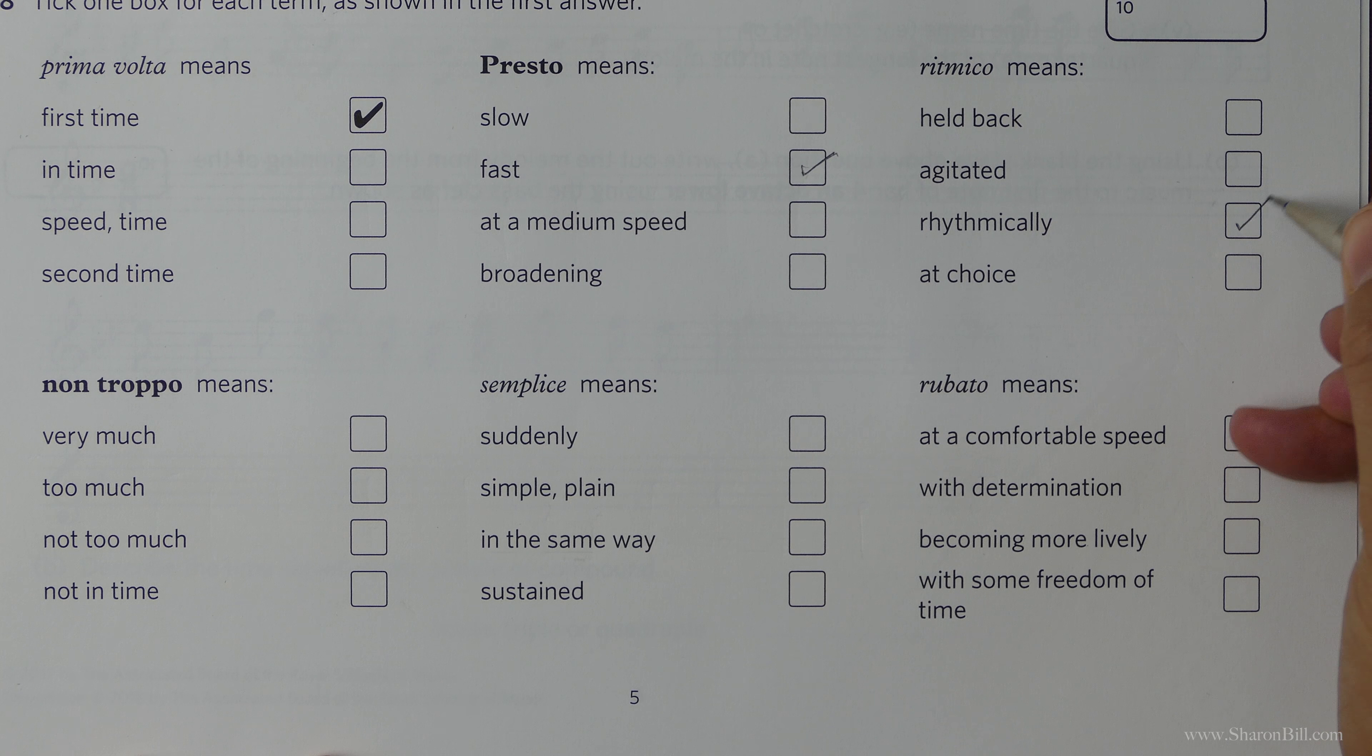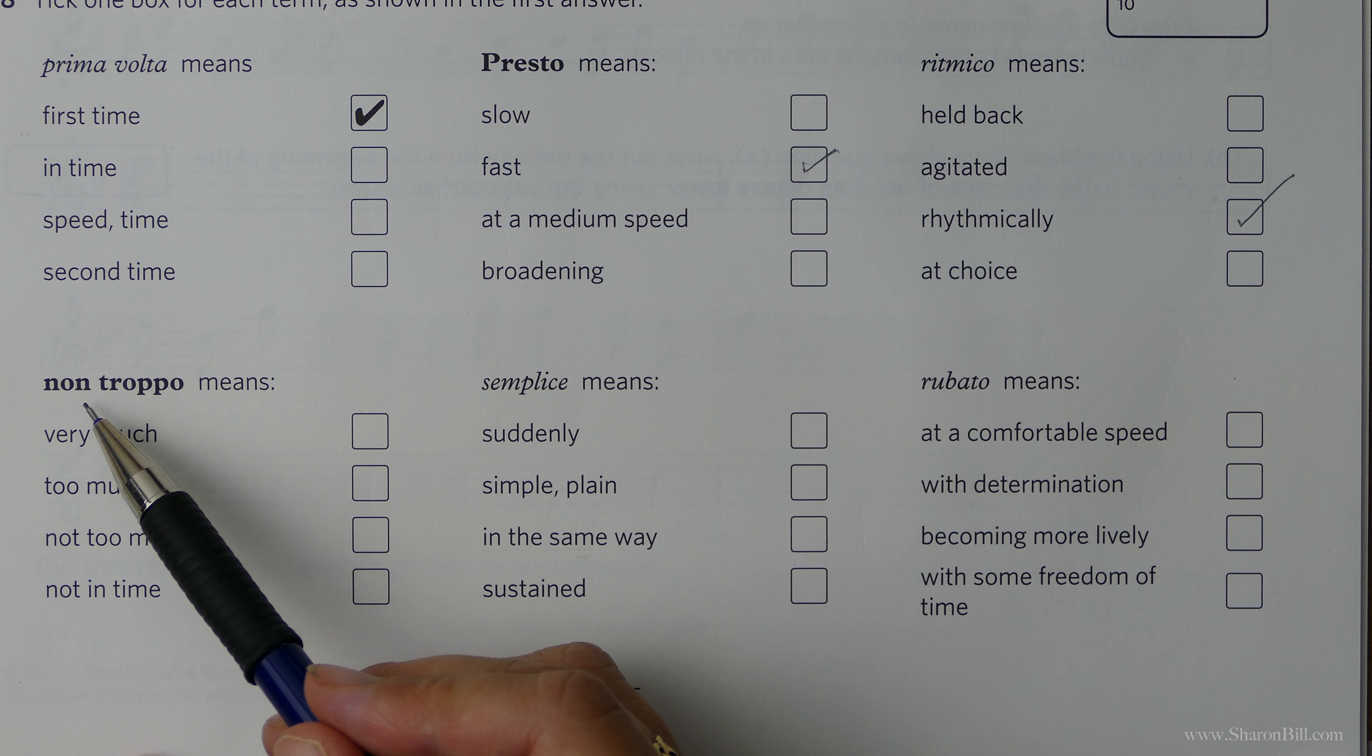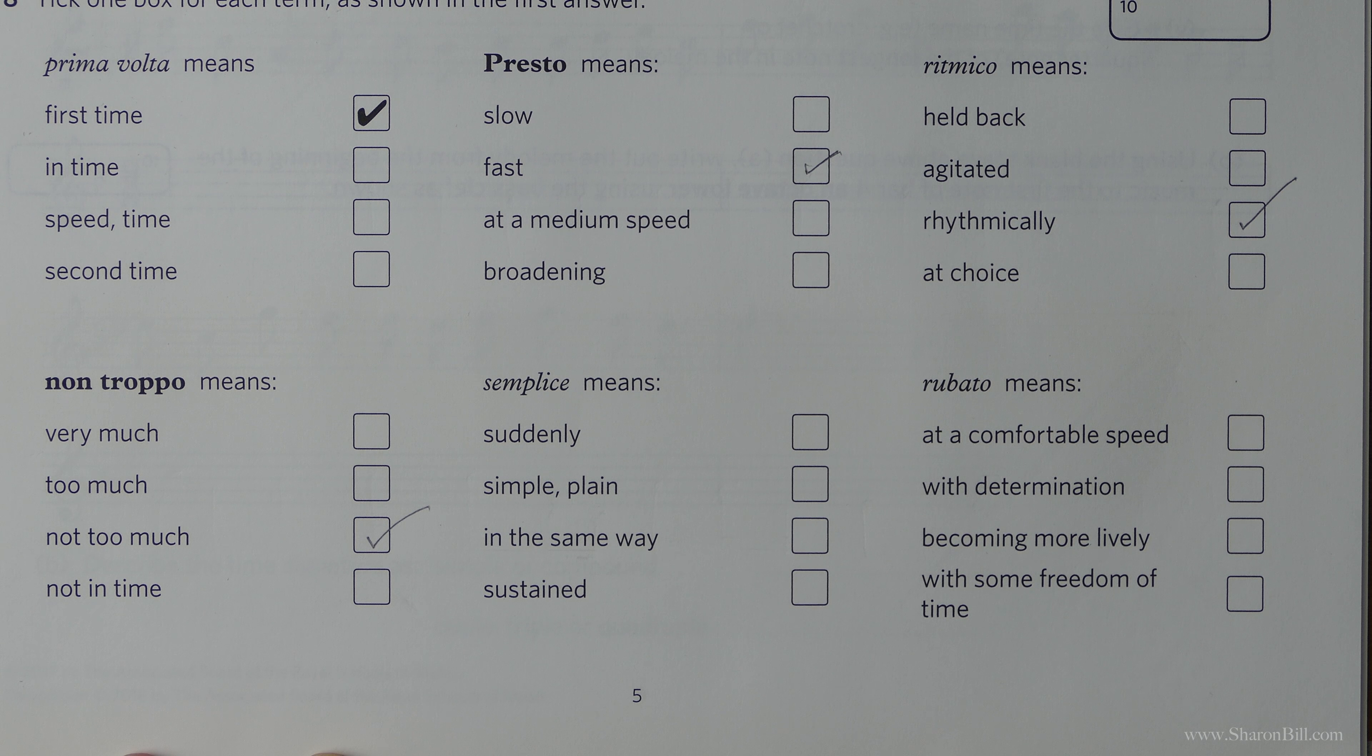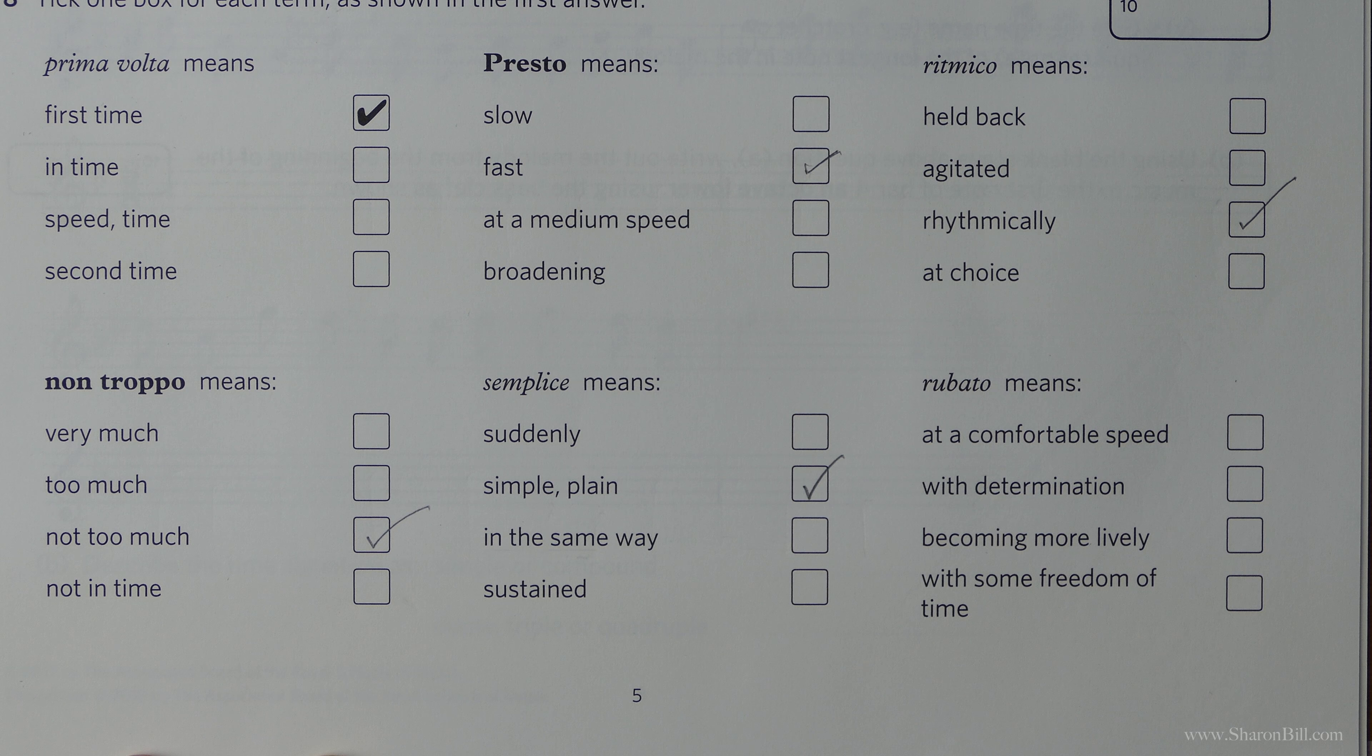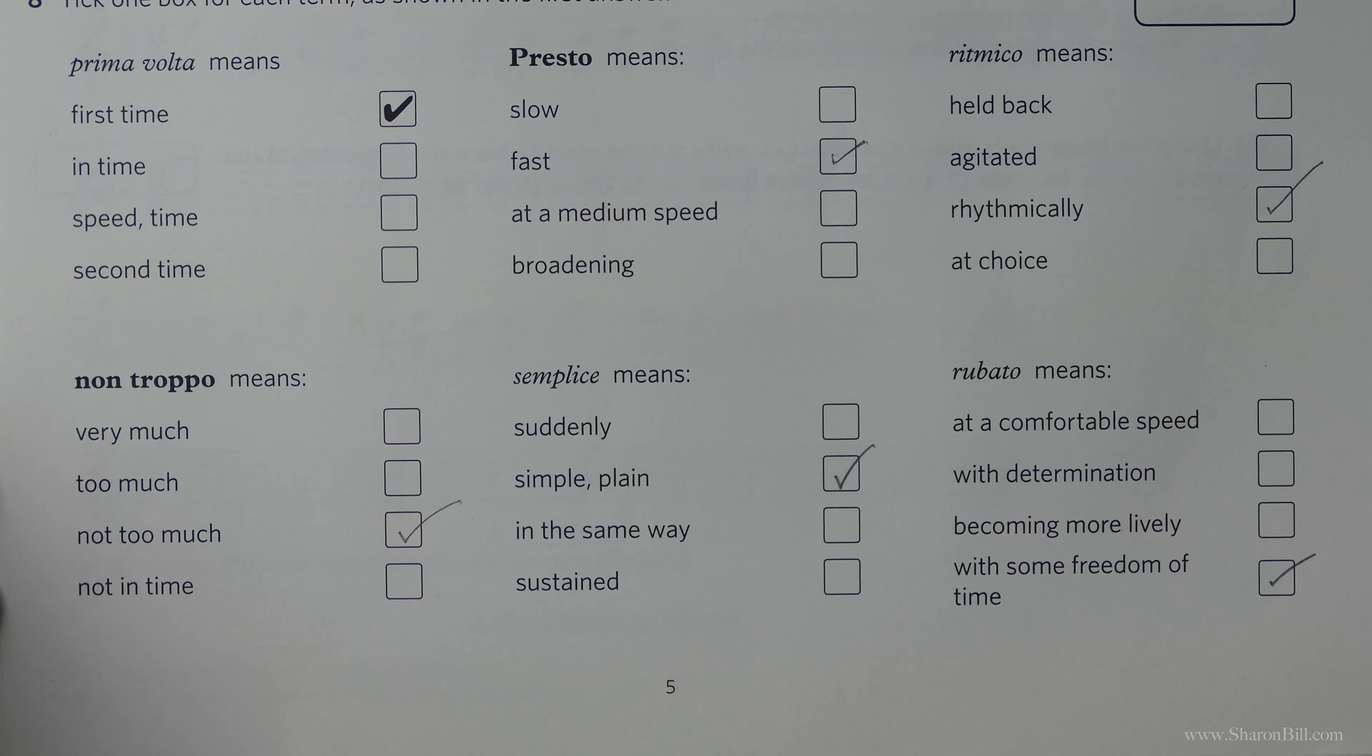Rhythmico. Rhythmically. That's not too far stretching the imagination. Non-troppo. We've got two words here. Non is not. And troppo is too much. So we need both words. Simplice is simple or plain. And rubato is where we can just pull the timing around. So it's with some freedom of time. It's not metronomically strict.